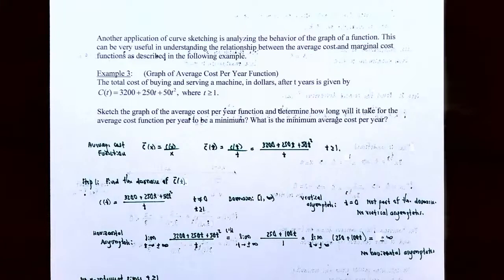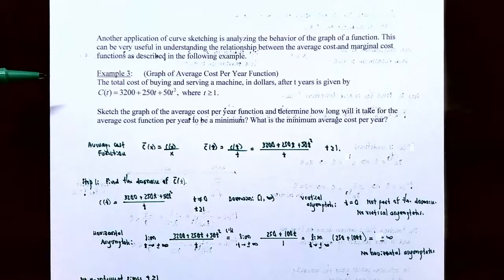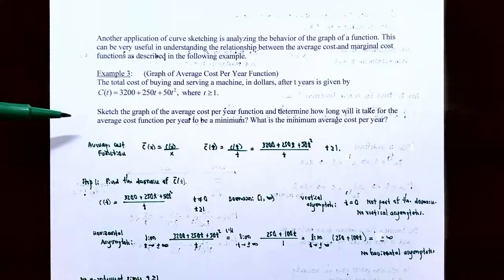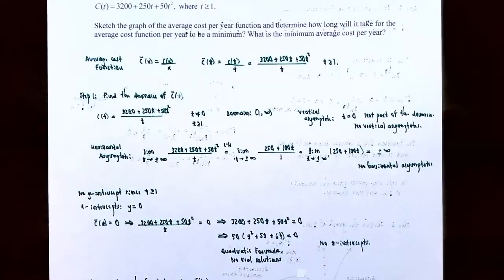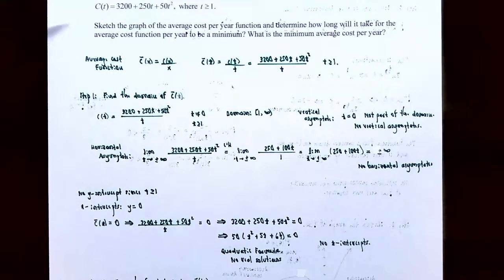Another application of curve sketching is analyzing the behavior of a graph of a function. This can be very helpful in understanding the relationship between the average cost and the marginal cost functions. Example 3: graph the average cost per year function. The total cost of buying and servicing a machine in dollars after t years is given by C(t) = 3200 + 250t + 50t², where t ≥ 1. Sketch the graph of the average cost per year function and determine how long it will take for the average cost per year to be at a minimum, and what is that minimum average cost.